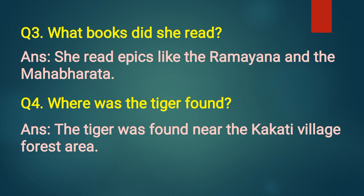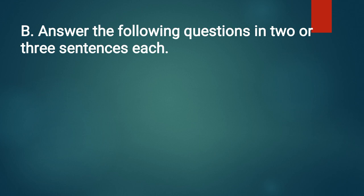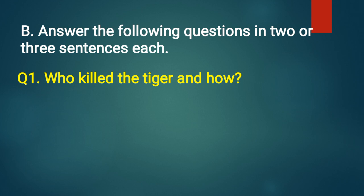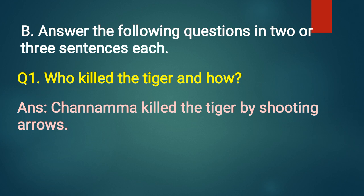Section B: answer the following questions in two or three sentences each. First: who killed the tiger and how? Answer: Channamma killed the tiger by shooting arrows.